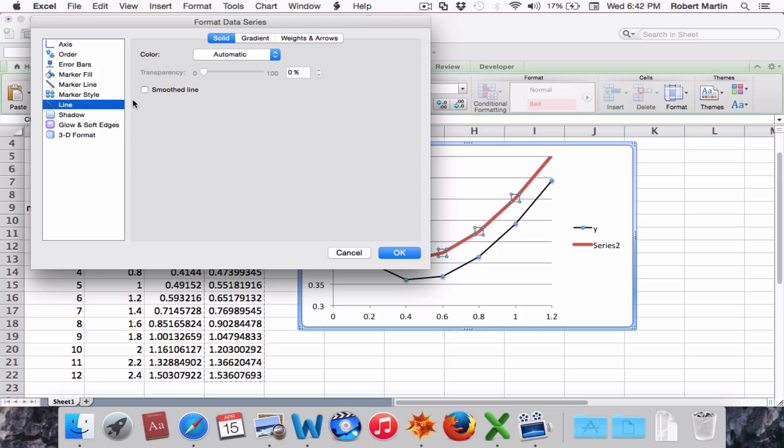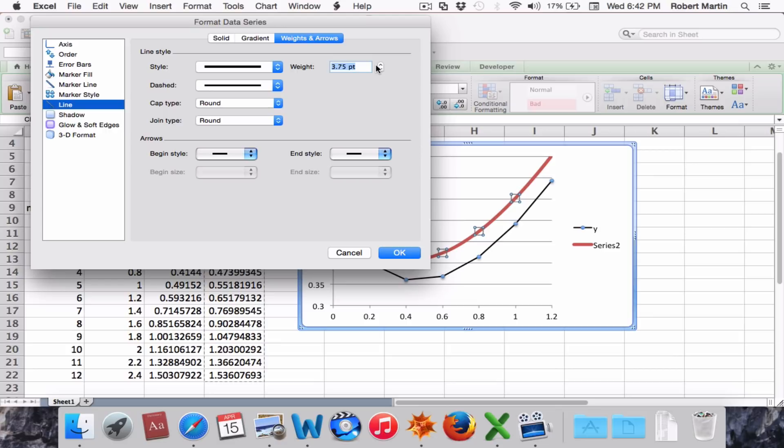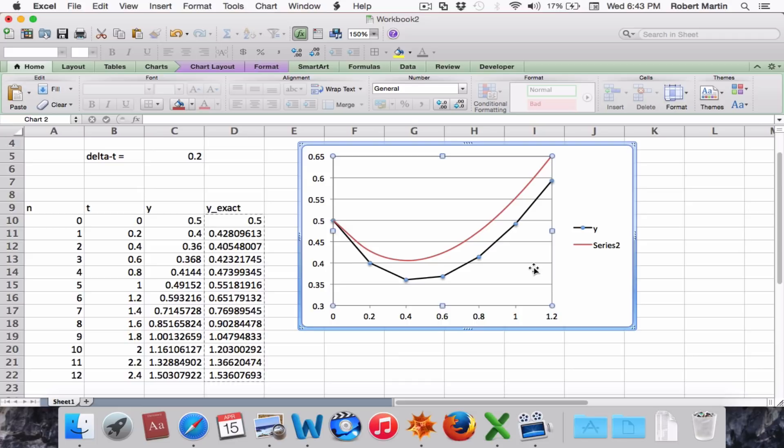we'll choose smooth line and again give it a size of 1.5 points. So here we now can see the exact solution compared to our approximate solution.